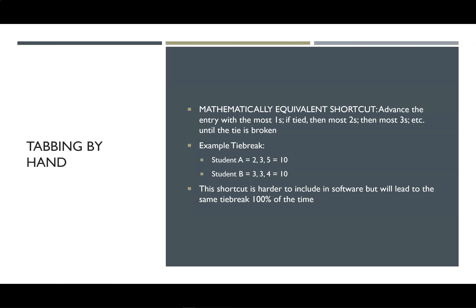If you are tabbing by hand, you do not actually need to add any fractions in order to break a tie by reciprocals. The reason is because reciprocal tiebreakers are mathematically equivalent to a much simpler step: who has the most ones? The person with the most ones should advance. If they're still tied, who has the most twos? The person with the most twos should advance. If they're still tied, and so on — whoever has the most of the better rank should always advance. That is mathematically equivalent to reciprocals.